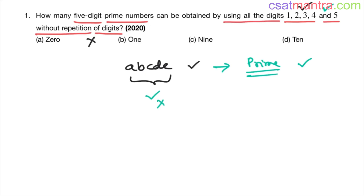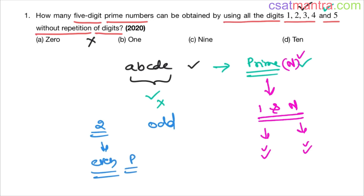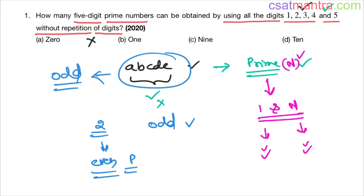What is the definition of a prime number? If N is a prime number, it should be divisible by 1 and that number itself only — no other number should divide it. Now, except 2, all prime numbers are odd. Two is the only even prime number. So if this number is to be prime, it must be odd. If it is even, it cannot be a prime number, because it would be divisible by 2.